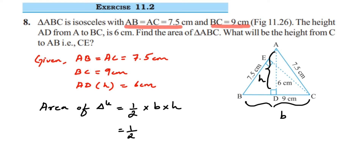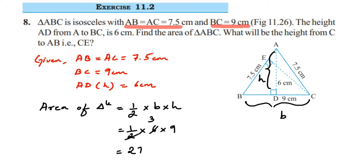Let's substitute the values: half into base 9 cm into height 6 cm. That's half into 9 into 6. Let's cancel — 2 and 6 give 3, and 3 nines are 27.